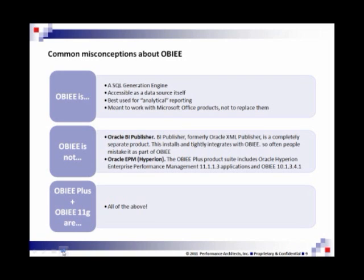The second misconception is that OBIE is mostly just an ad hoc exploration tool. Because OBIE is such an easy tool to use to extract large amounts of data through tools like Answers, it's sometimes very tempting for users to dump large amounts of data out of the system and use it for analysis later on. While the tool does provide ad hoc exploration, it's really meant for guided analytics and reporting — presenting high-level content where users can understand trends and analysis at a glance, and then drill down for more detail.